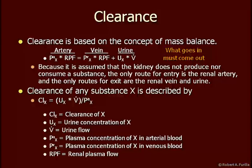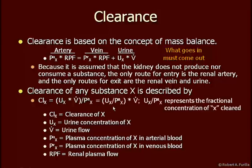What I'm going to do now is rearrange the equation, because this doesn't mean much to people. If we rearrange the equation, what we're now looking at is the urine concentration of substance X divided by the arterial plasma concentration of substance X. That is a ratio, which gives us a fractional concentration of the substance cleared. UX over PX is a unitless ratio. We multiply that ratio by urine flow, and now we get a rate of clearance.